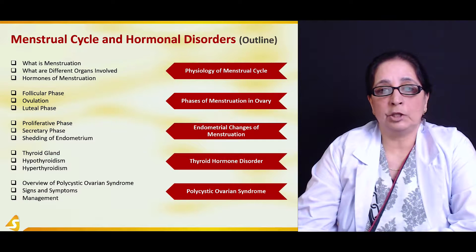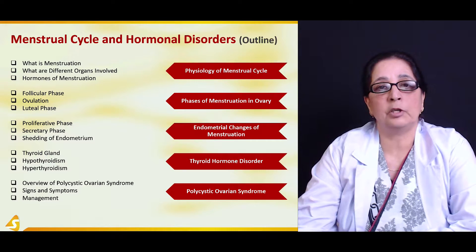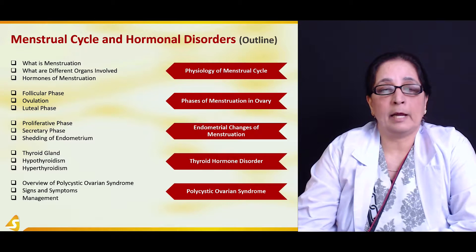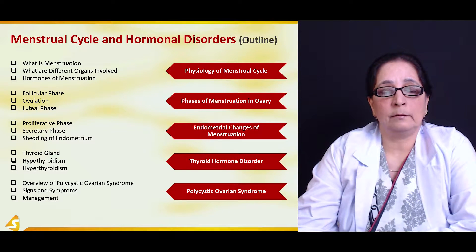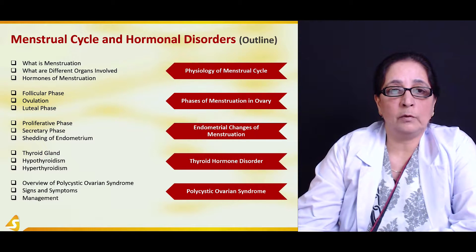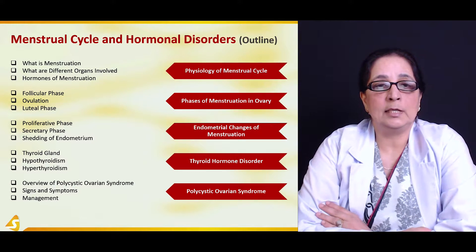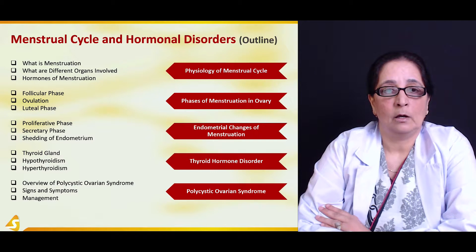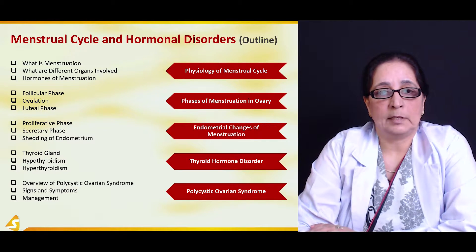In the second section of our lecture we will talk about the phases of menstruation in the ovary. In the ovary we have three phases of the menstrual cycle: one is the follicular phase, then ovulation, and then the luteal phase — and all the changes happening in each of these three phases.